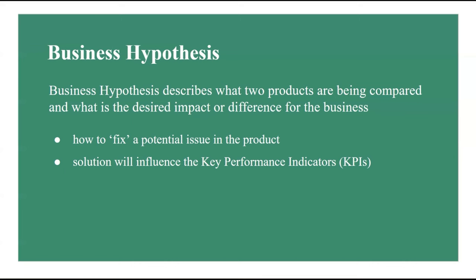If the answer to the metric validity question is higher engagement, then you can use click-through rate, or CTR, as your primary metric. This is a common metric in A/B testing when dealing with e-commerce, product search engines, and recommender systems. CTR measures the effectiveness of a digital marketing campaign or user engagement with a feature on your webpage and is typically the percentage of users who click on a specific link, button, or call to action out of the total number of users who view it. The formula is: CTR = (Number of Clicks / Number of Impressions) × 100%.